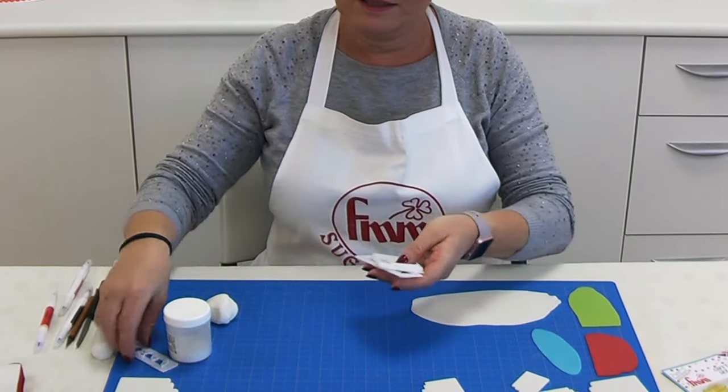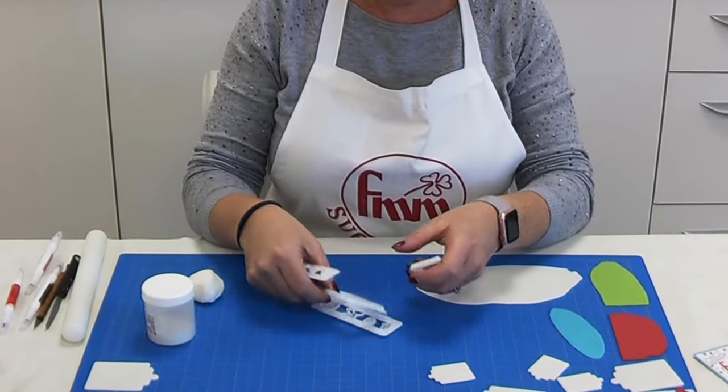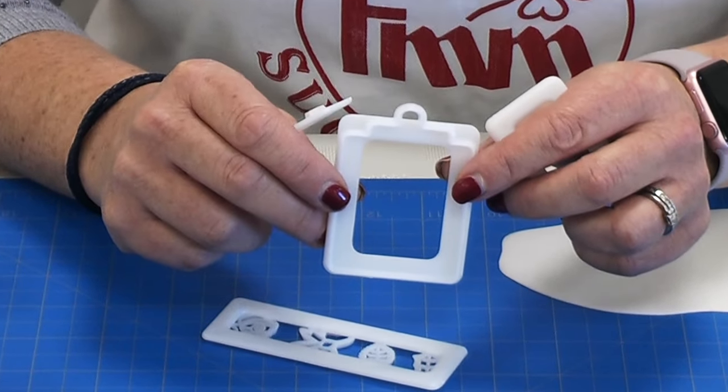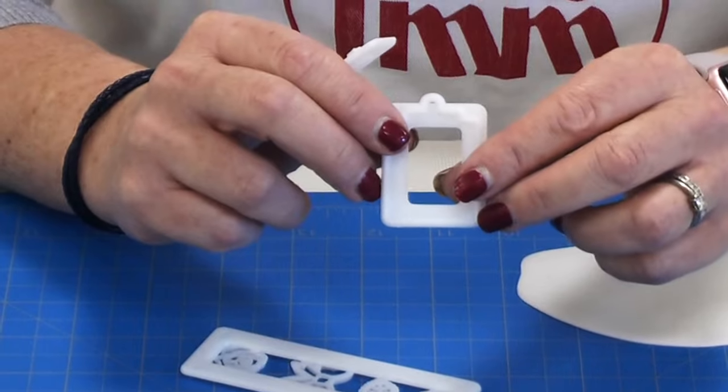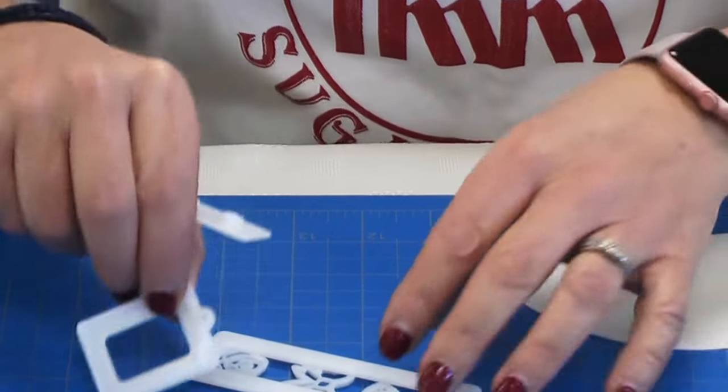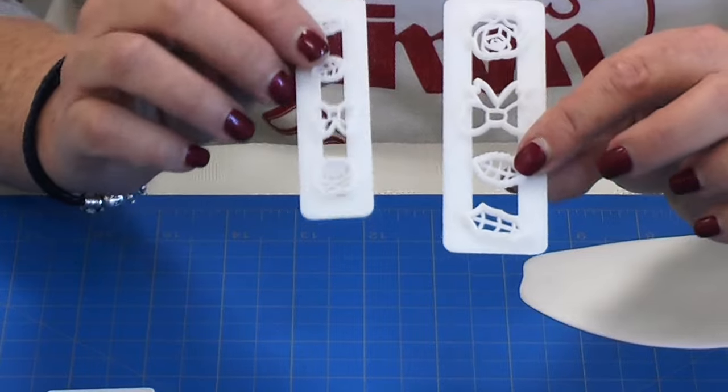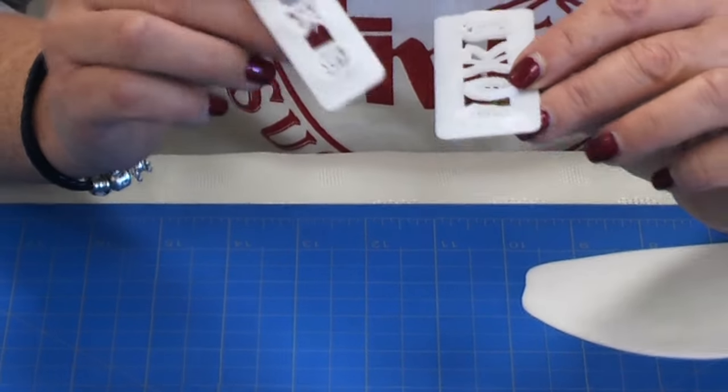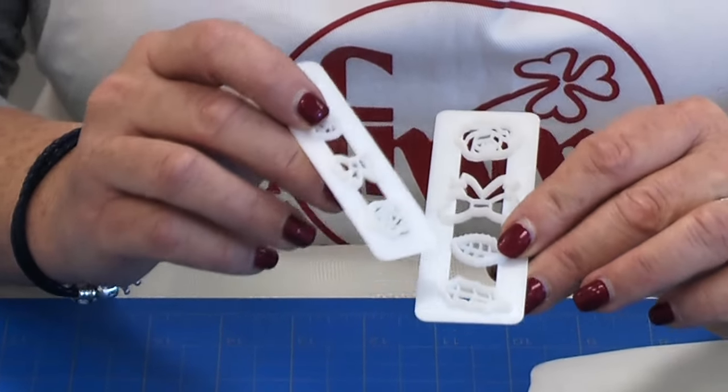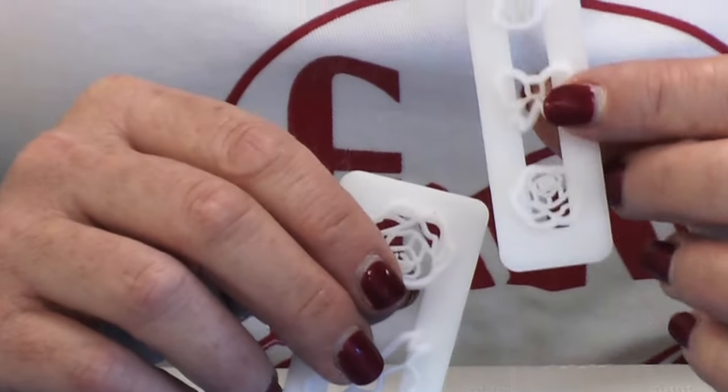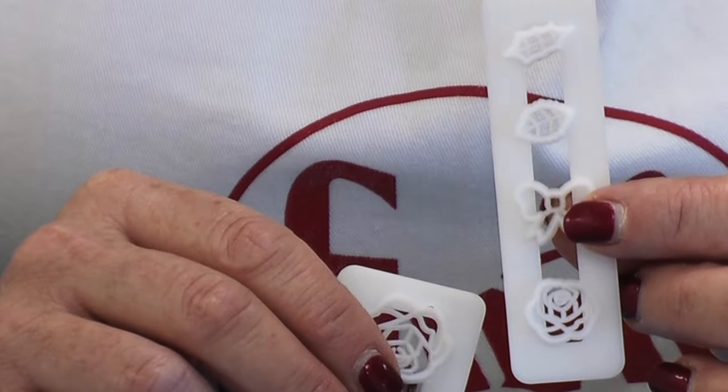The set consists of four pieces, a large gift tag, a small gift tag and two decorating strips, one for each of the size gift tags. On the decorating strip you have a holly leaf, a rose leaf, a bow and a rose and just in the smaller size here for the smaller gift tag.